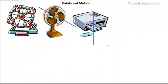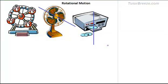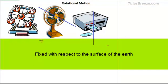See, each of these rotating objects have a fixed axis. You have an axis over here about which this is rotating. There is an axis about which the fan is rotating, and the axis is fixed because it is at rest with respect to the surface of the earth.